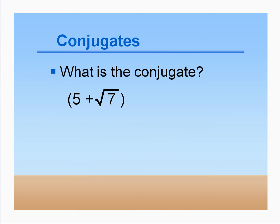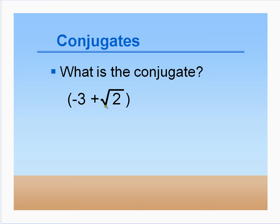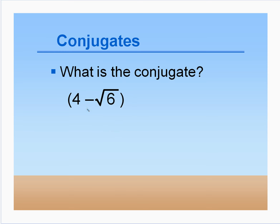Make sure we understand conjugates. The conjugate of 5 plus root 7 is simply 5 minus root 7 — multiplying them gives a rational number. The conjugate of negative 3 plus root 2 is negative 3 minus root 2 — we're just changing the middle sign. And the conjugate of 4 minus root 6 is 4 plus root 6.